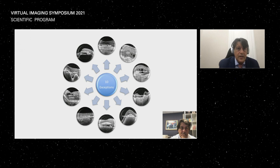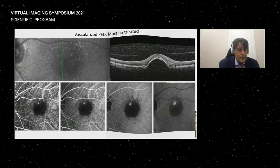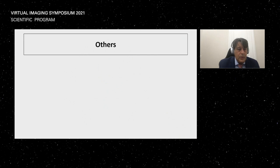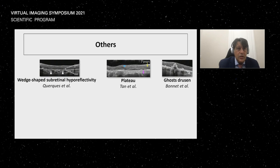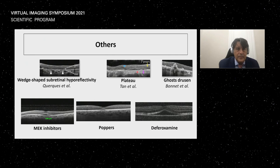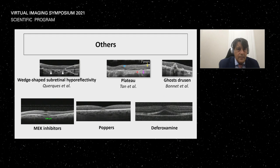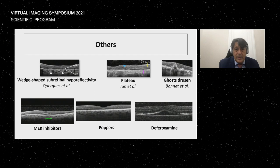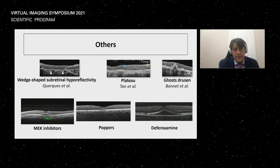So we could see the 10 exceptions to this rule, though there are many more. Just a brief overview of additional conditions: ghost drusen, the wedge-shaped subretinal hyperreflectivity, the plateau aspect, some toxic conditions — MEK inhibitors, poppers, deferoxamine — in which we can observe hyporeflective lesions. There are much more, but these are just some examples.